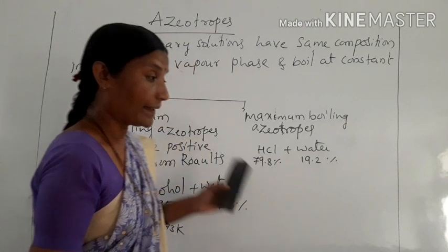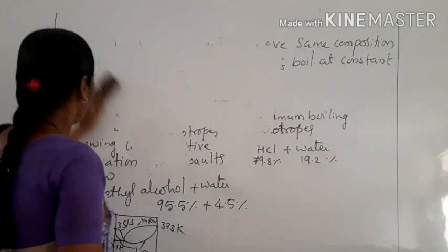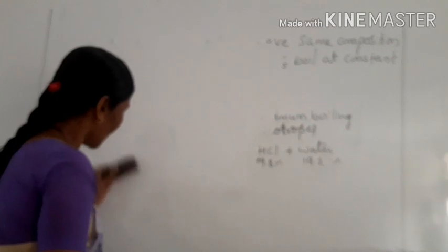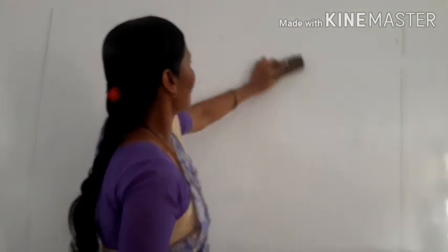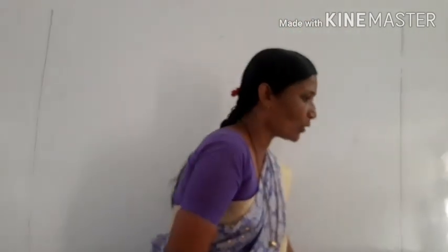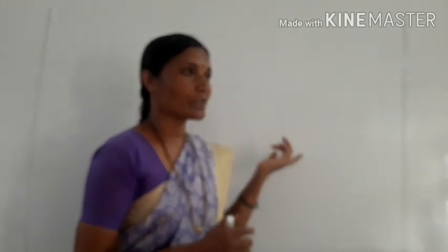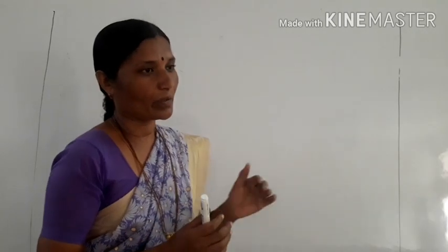Ideal and non-ideal solutions are very important. Positive deviation from Raoult's law and negative deviation from Raoult's law, as well as minimum and maximum boiling azeotropes. For minimum boiling, a mixture of ethyl alcohol and water, also known as rectified spirit, cannot have water removed by fractional distillation. This type of mixture is known as azeotropes. Minimum azeotropes boil below the boiling point of either component; maximum azeotropes boil above the boiling point of either component.